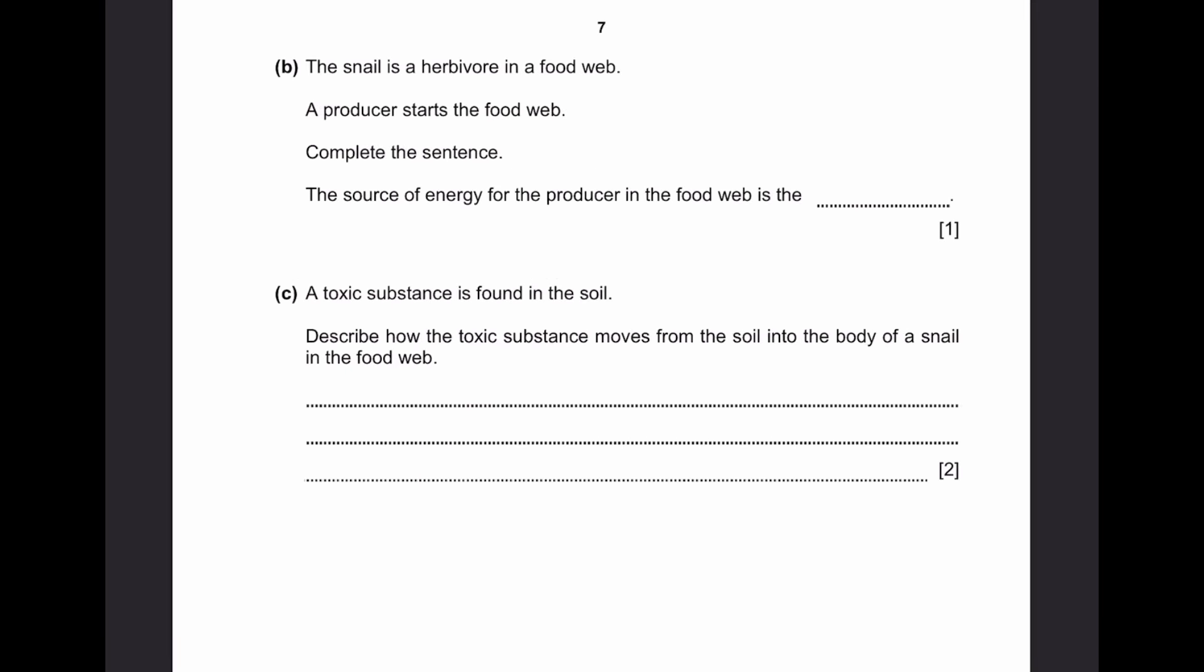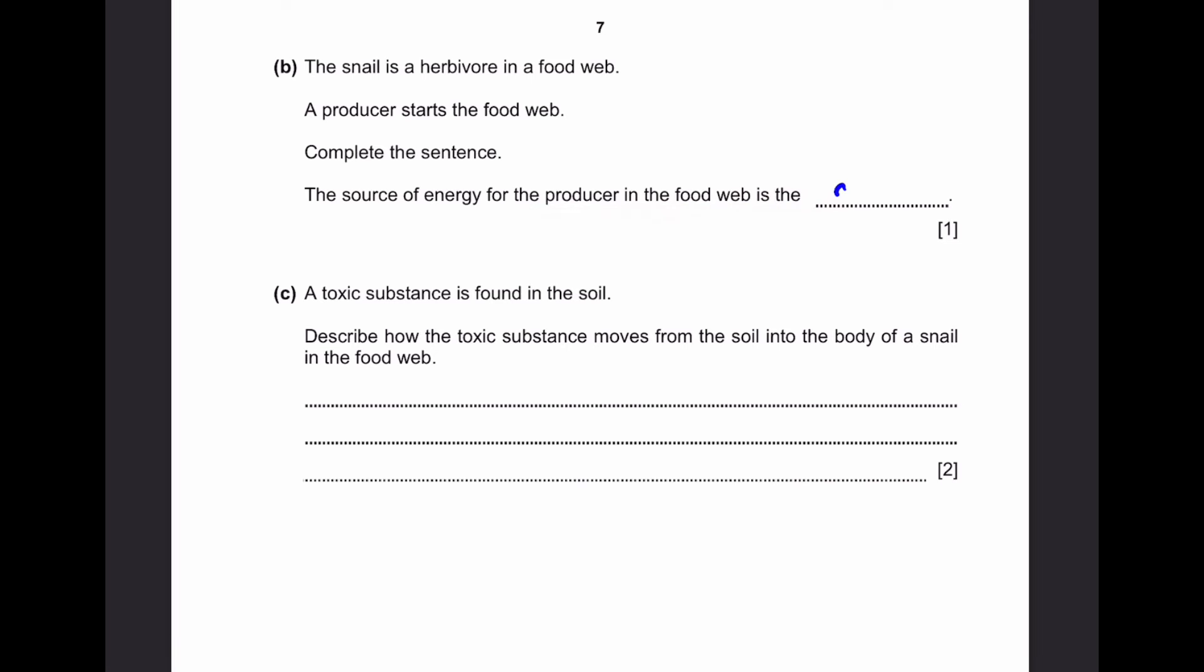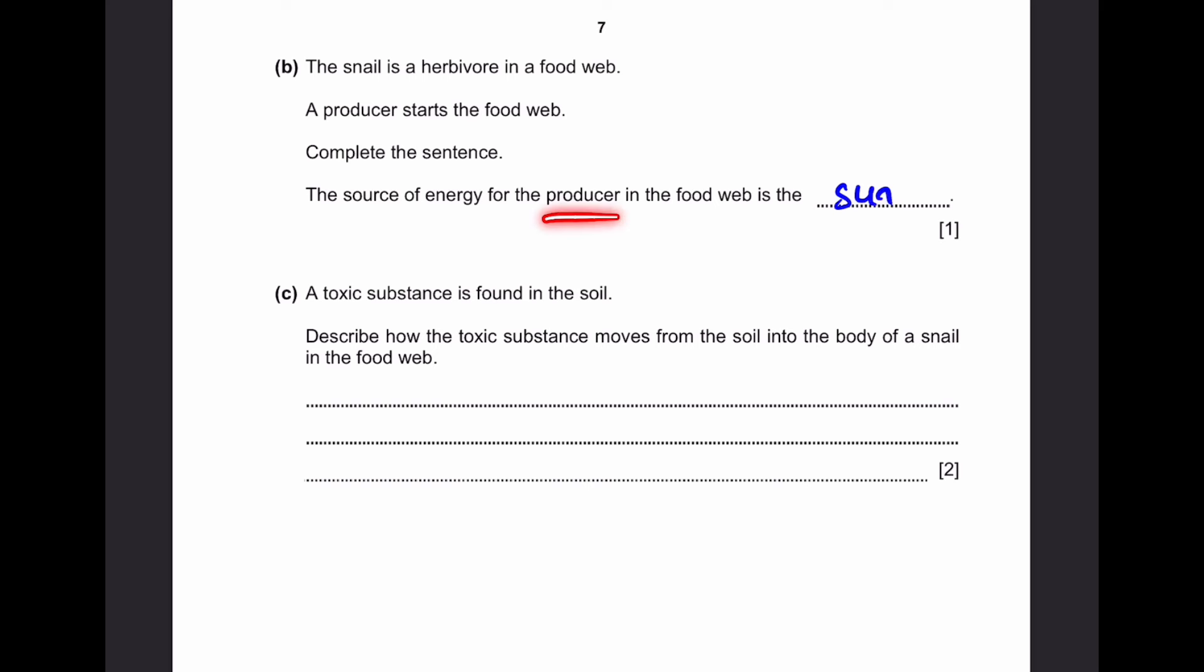Part B: The snail is a herbivore in a food web. A producer starts the food web. Complete the sentence. The source of energy for the producer in the food web is the... Of course, it's the sun, because the producers are always plants or photosynthetic beings, and they use photosynthesis to gain energy. Where does this energy come from? The sun. Only then they can do photosynthesis.